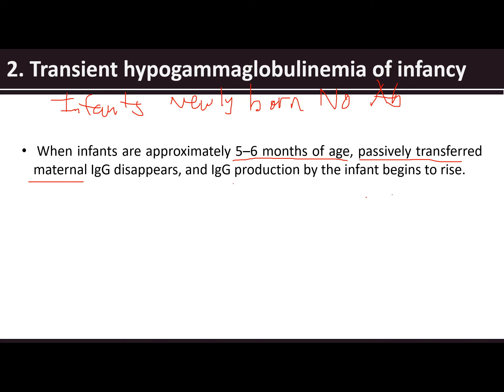When your infants are born, they have no antibodies to produce — they have to rely on their mother's immunoglobulin. That lasts until the fifth to sixth month of age of the infant. After that, the maternal IgG starts to disappear, and infant IgG production would begin to rise.